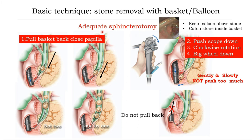Basic technique for stone removal with basket or balloon: after adequate sphincterotomy, you put the balloon above the stone or grab the stone with the basket — one stone at a time, not two. Pull back the basket or balloon close to the papilla — this is step one. Step two: push scope down. Step three: clockwise rotation. Step four: push down.